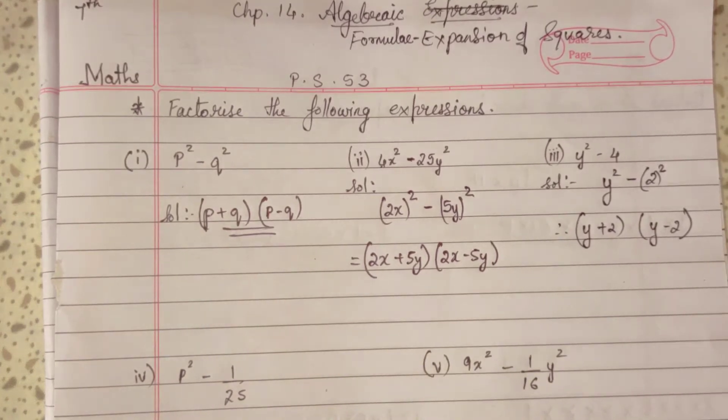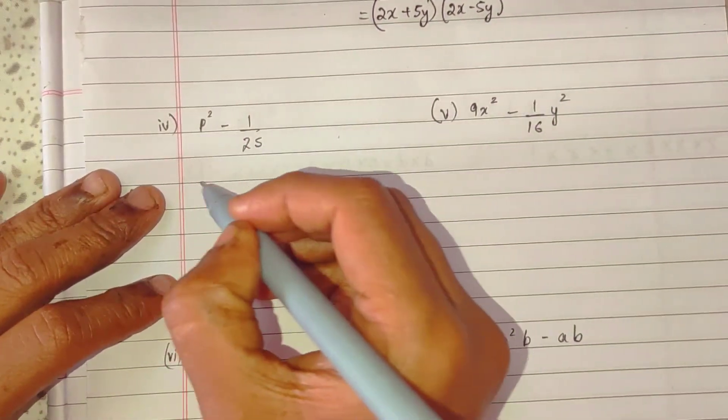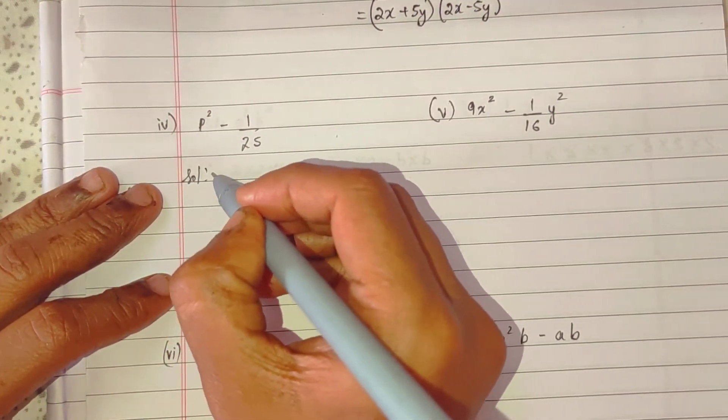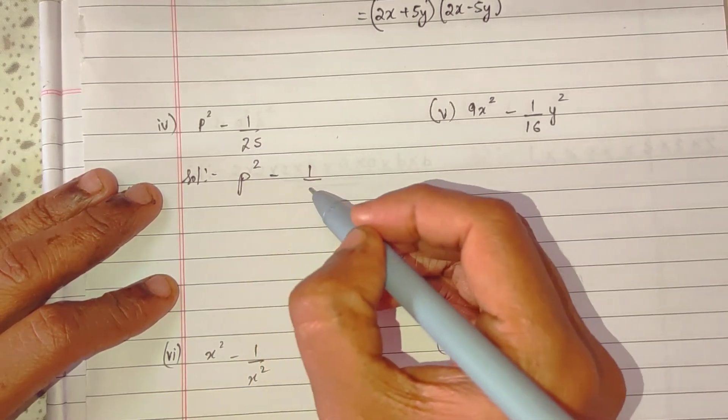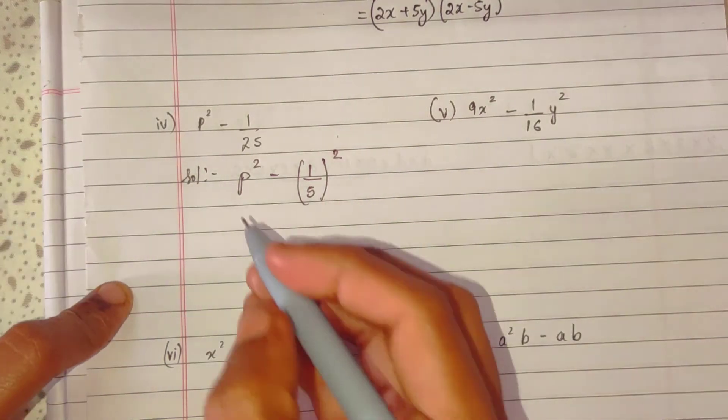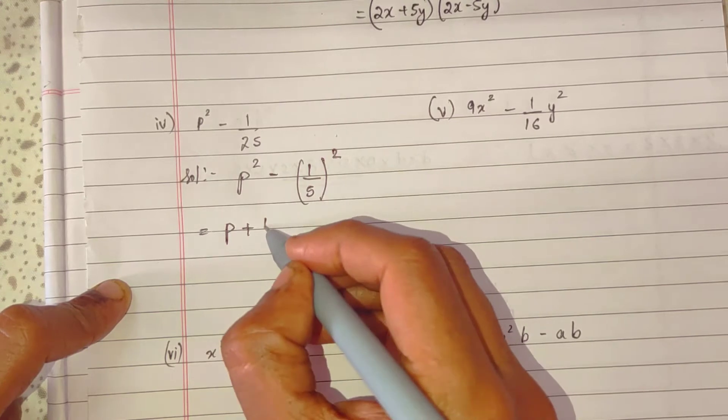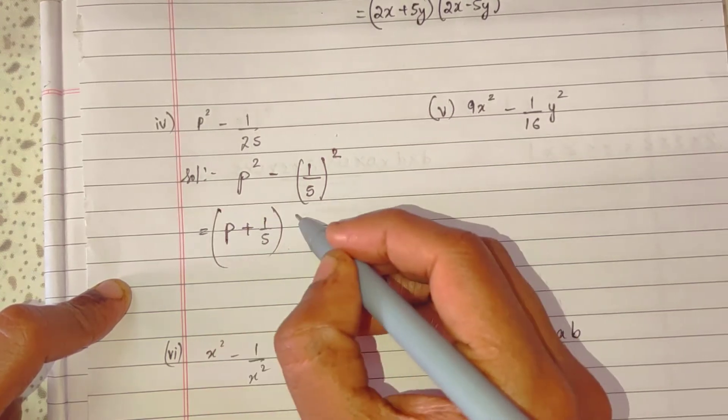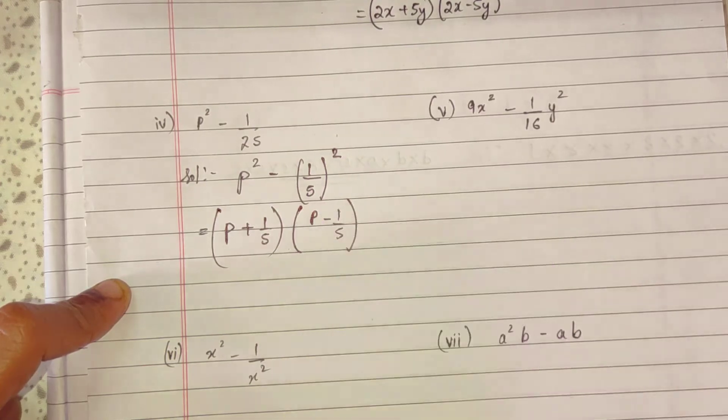Fourth sum's solution. P square will be as it is. 1 upon 25 is 5 square, so 1 upon 5 the whole square. So P plus 1 upon 5 the whole bracket, P minus 1 upon 5.